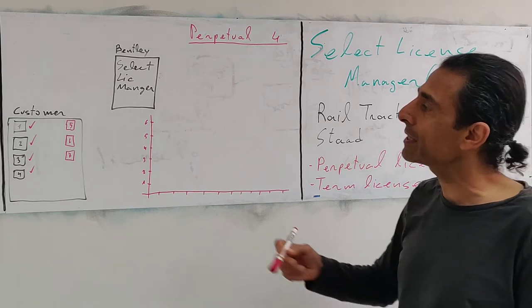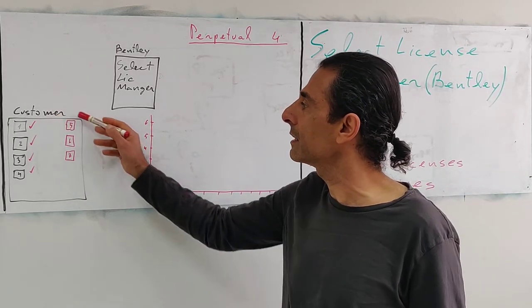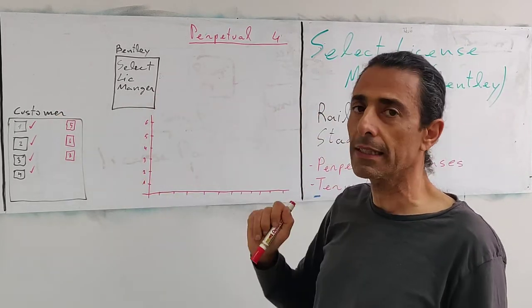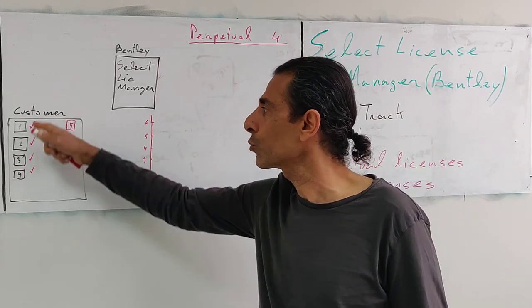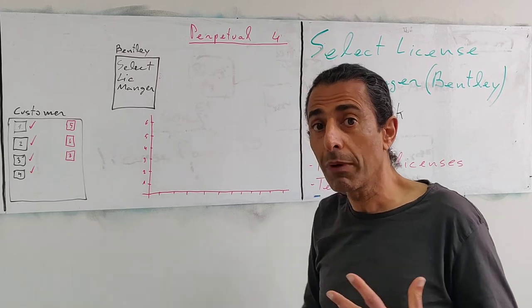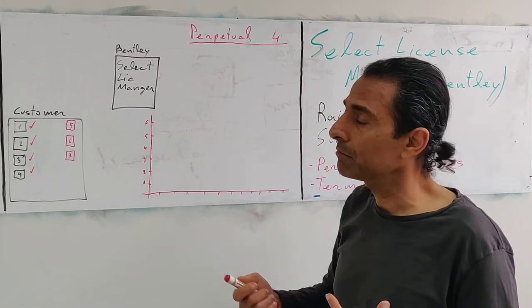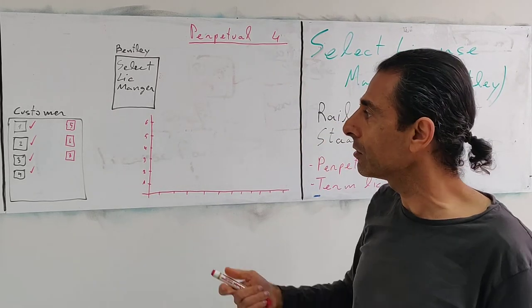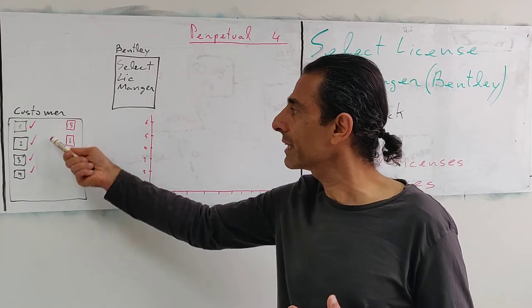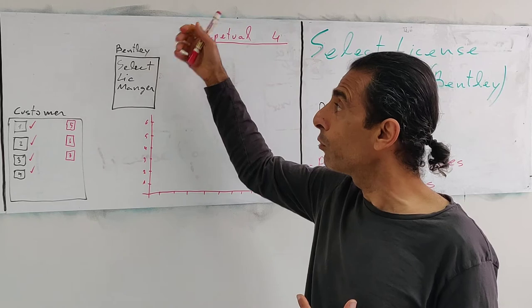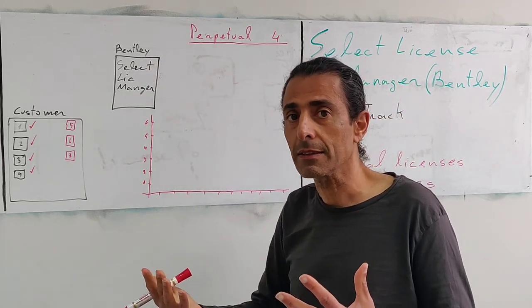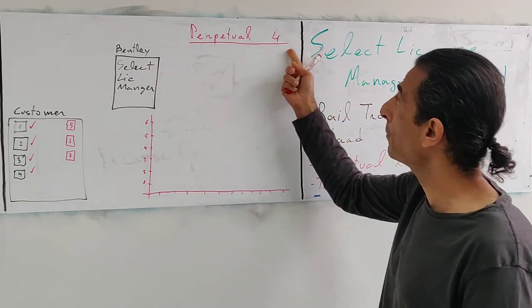So basically, each of these users when they access the Select License Manager they might get a perpetual license since one of the normal users doesn't use it at the moment, or maybe they will pull an additional license. But they only have four.